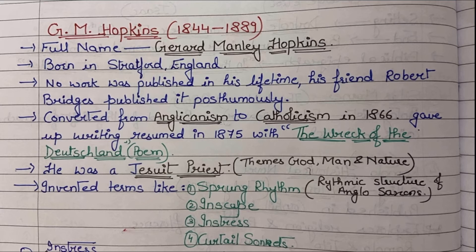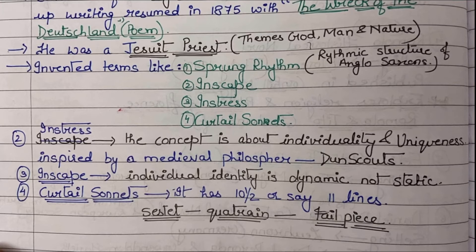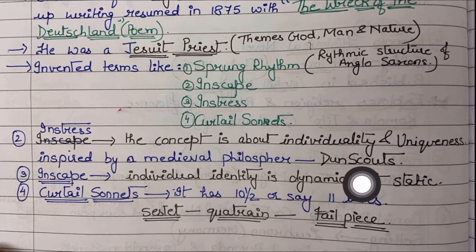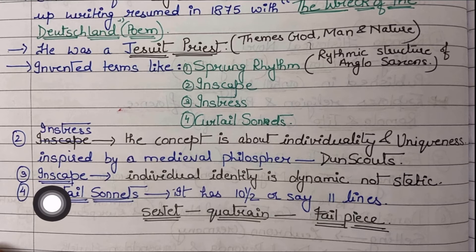Sprung rhythm is an Anglo-Saxon-inspired rhythm structure. Instress refers to the concept of individuality and uniqueness — the idea that every person has individuality and uniqueness. This concept of instress was inspired by Duns Scotus, a medieval philosopher.